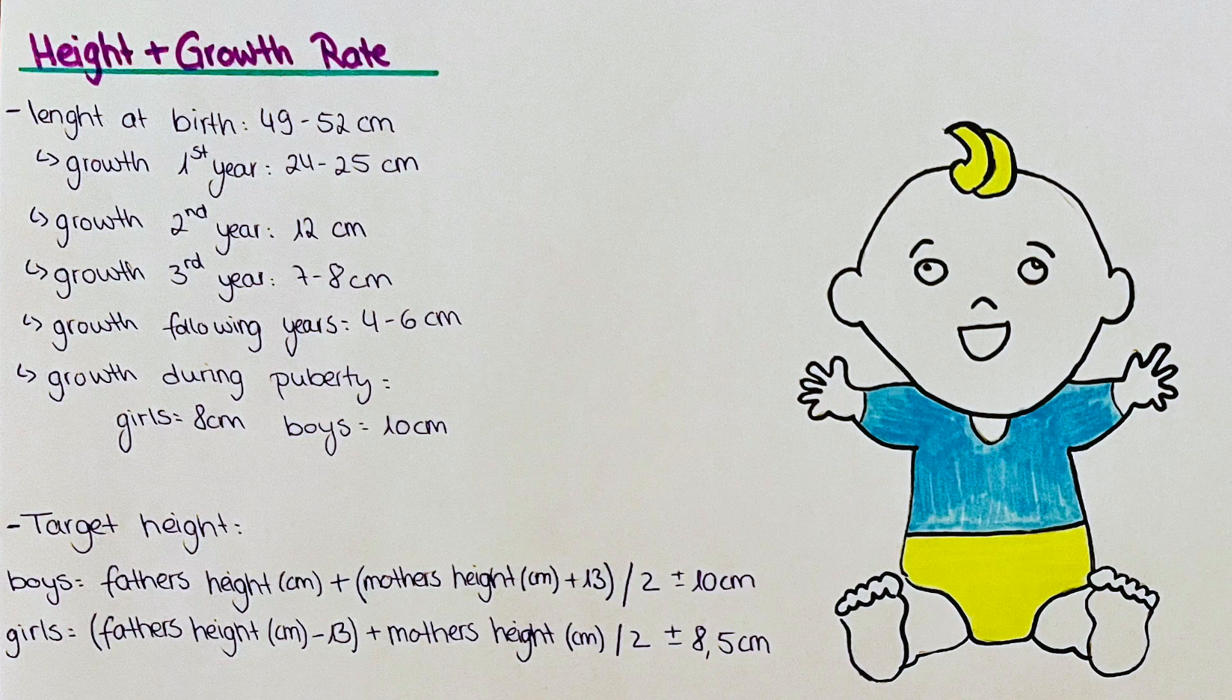So if you want to calculate the target height for a boy, we will take the father's height plus the mother's height plus 13 divided by 2. Then we get the answer and the answer plus minus 10 centimeters will be our range of what's to be expected. So you'll end up with a very rough estimation, however mostly it can be quite accurate.